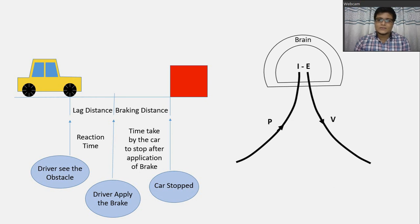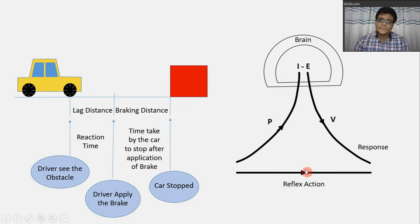So, the volition, because of the volition, the response will be occurred. Okay. That is the application of the brake. So, why these processes happen? Because of the reflex action of the driver. So, PIEV theory justifies the reaction time properly.